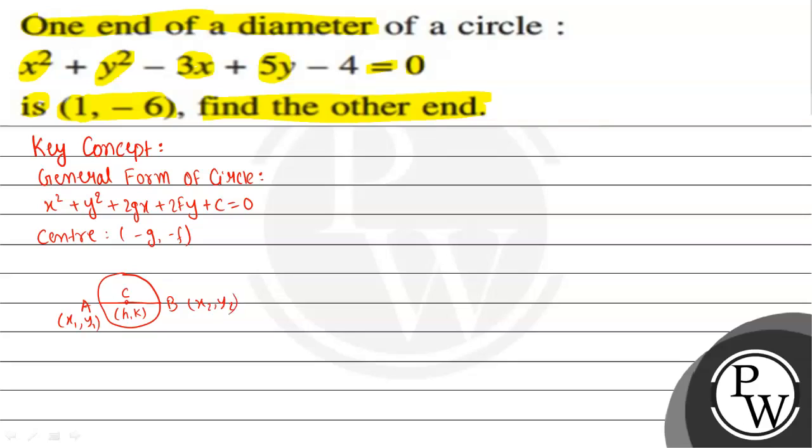The center divides the diameter into two equal parts, so AC = BC. Therefore, h = (x₁ + x₂)/2 and k = (y₁ + y₂)/2.